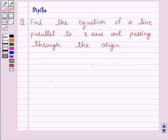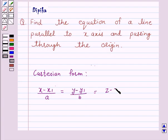So the Cartesian form of our equation of line which passes through a given point and has a given direction is (x minus x1) over a is equal to (y minus y1) over b is equal to (z minus z1) over c, where x1, y1, z1